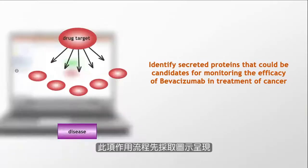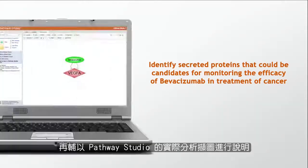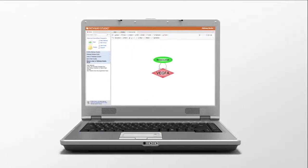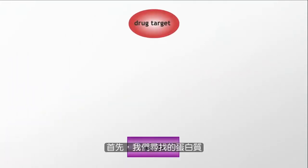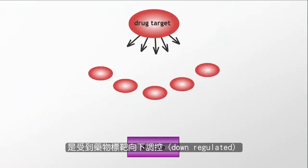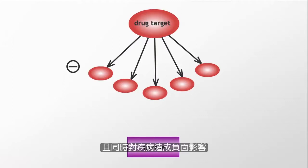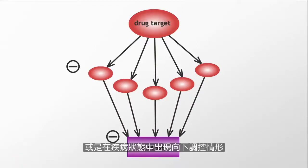The workflow is first illustrated, then followed by actual analysis screenshots from Pathway Studio. We start the workflow by looking for proteins that are down-regulated by the drug target, and also have a negative effect on the disease, or are down-regulated in the disease state.